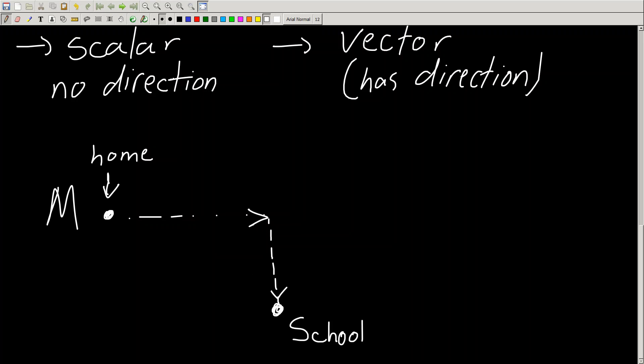The displacement is the change of position, just as we had spoken of earlier. It's just the change of position, the arrow drawn from point one to point two. This is the displacement.